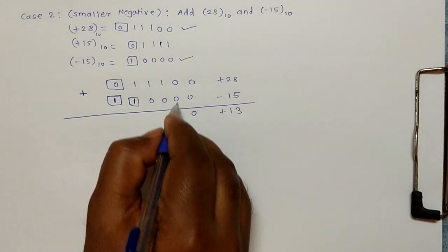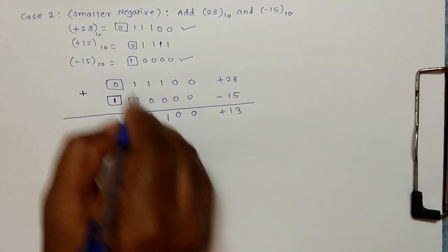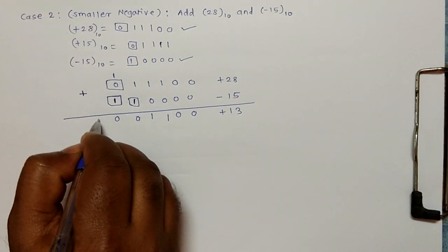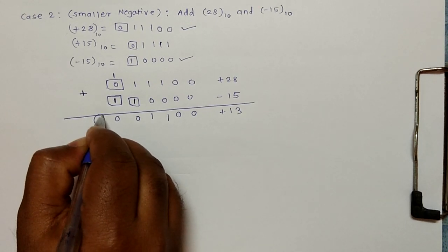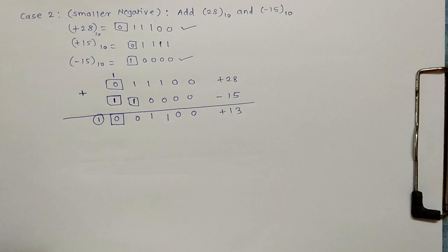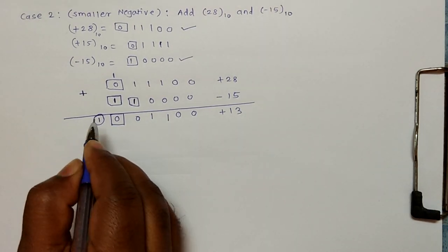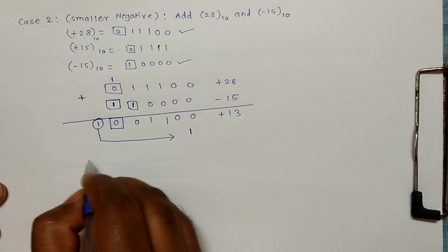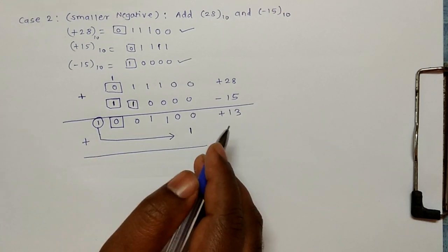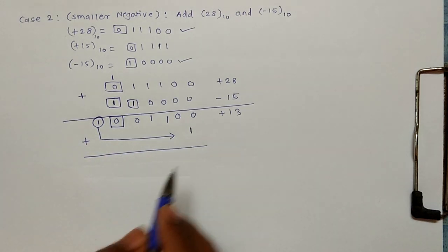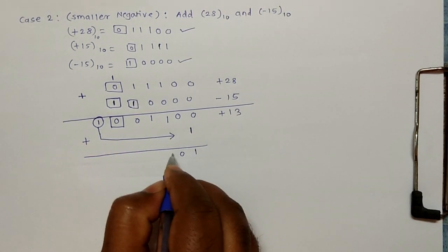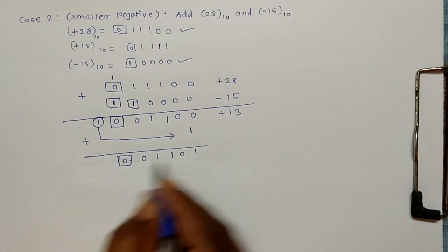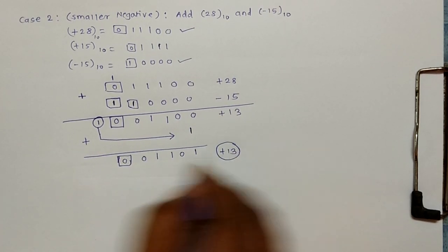Since the result fits in five or fewer bits, no extension is needed. Adding the two numbers: one plus one is zero with carry one, one plus one is zero carry one. Carry is generated. Remember, in one's complement if a carry is generated, we have to add that carry back into the result. So we add the carry to the result to get one zero one one zero.